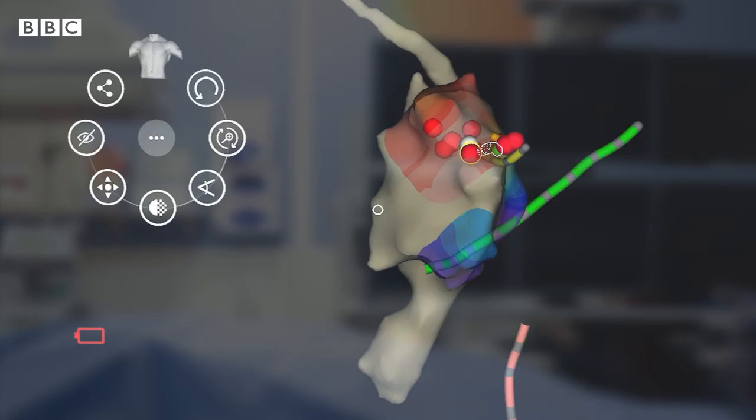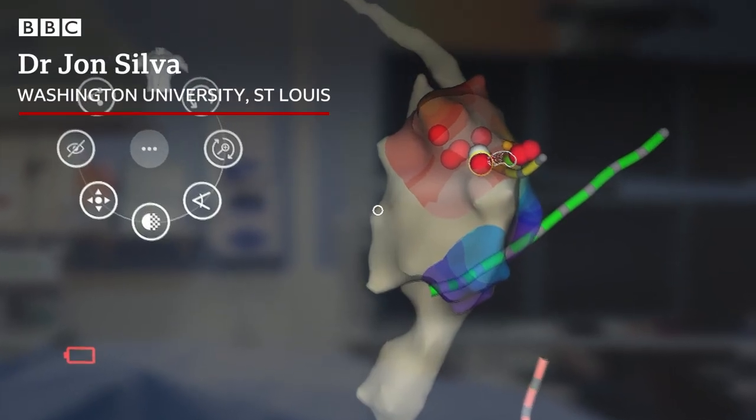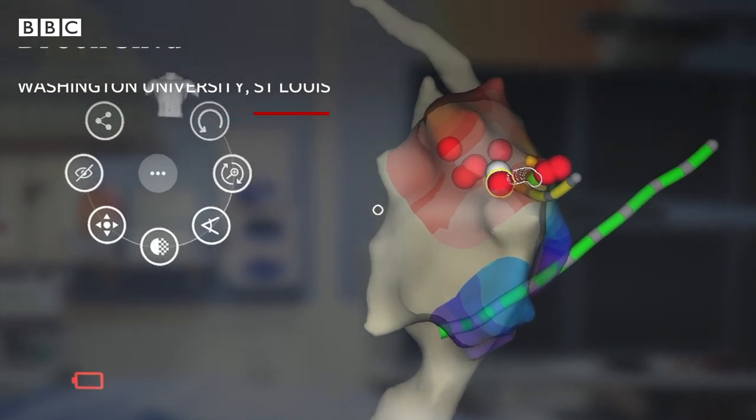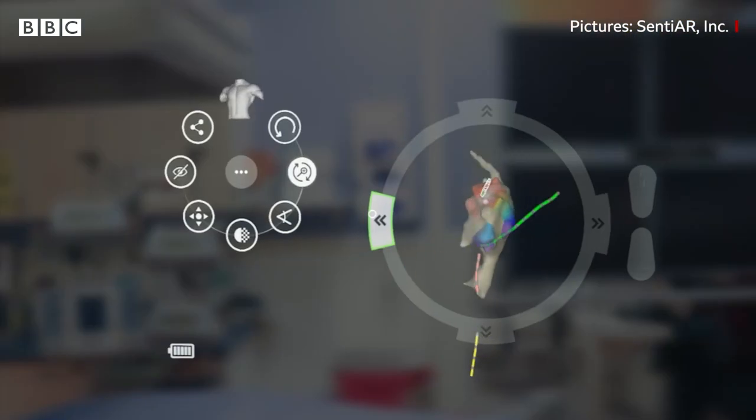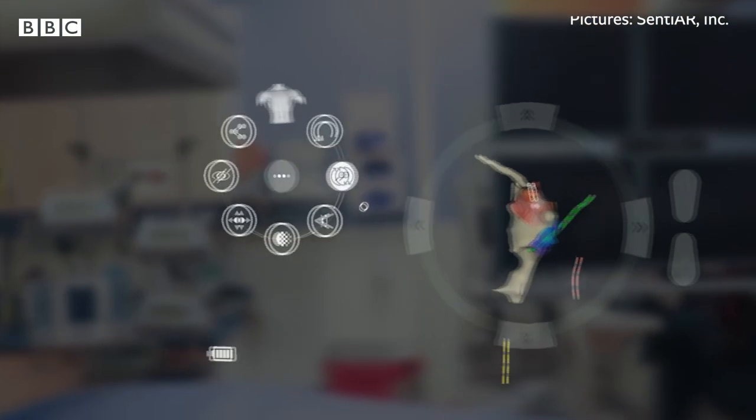We give her an idea of how the electrical signal travels across the surface of the heart. And by giving her an understanding of what pathway it takes, then she can target the exact right spot to stop the arrhythmia.